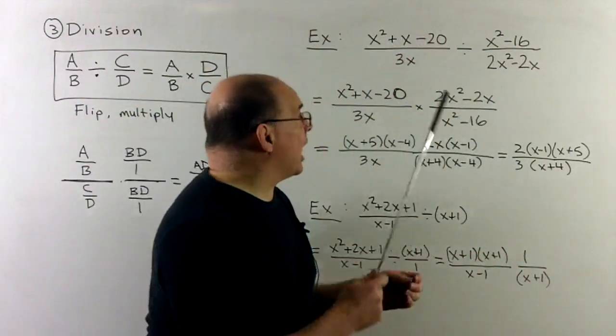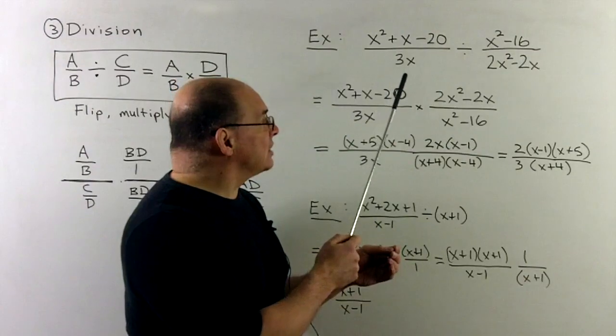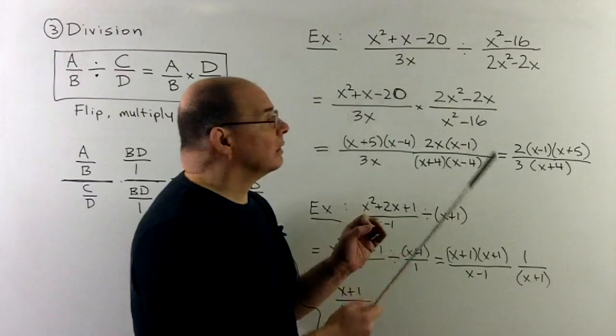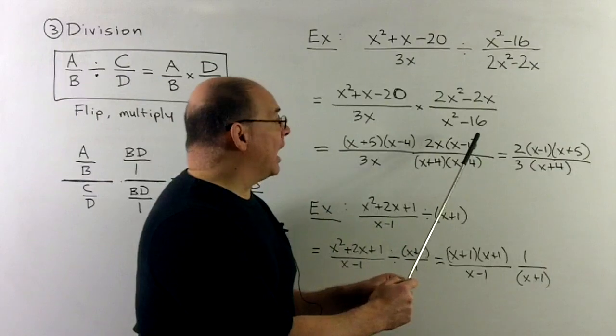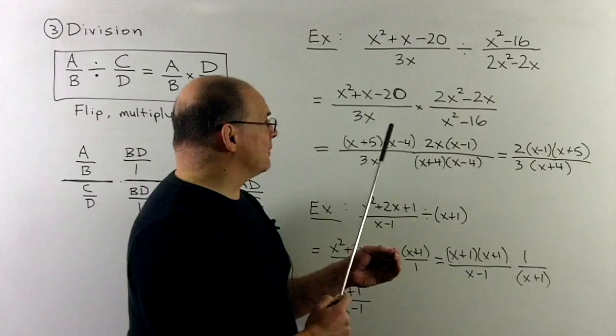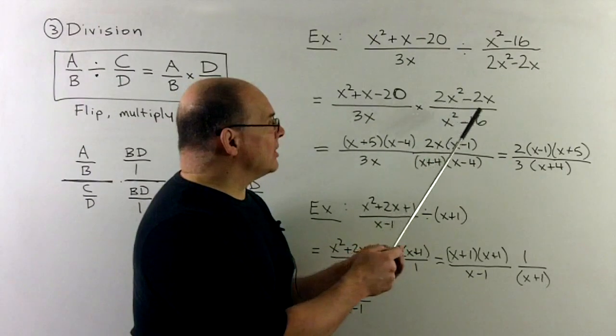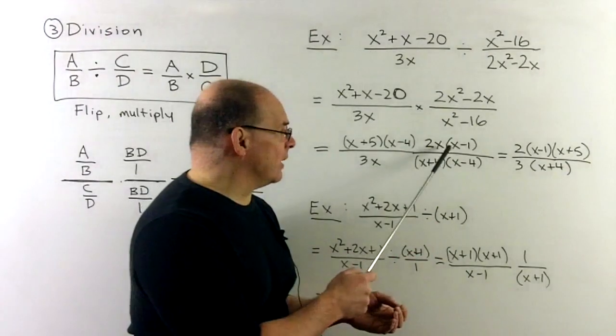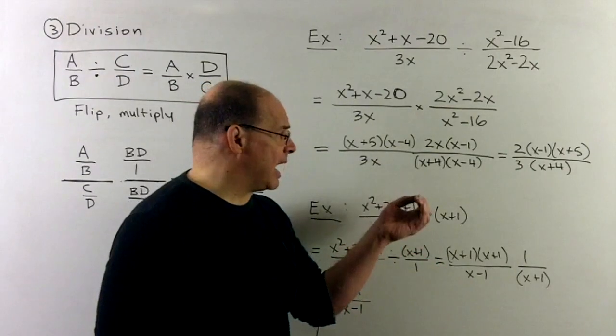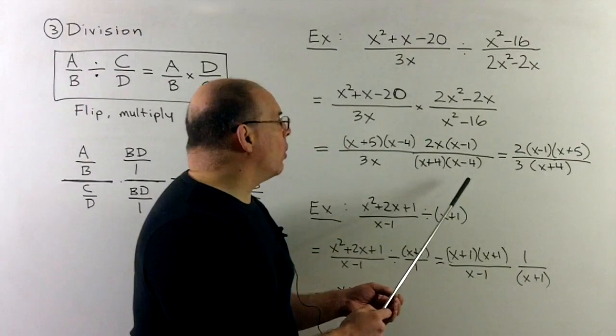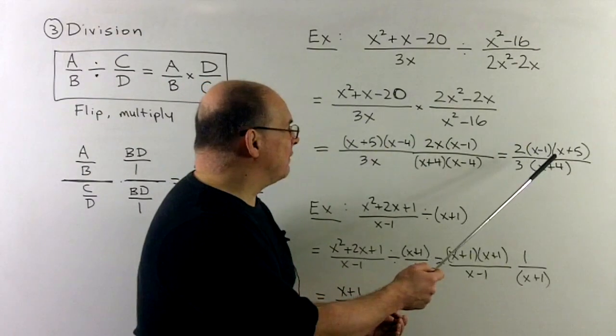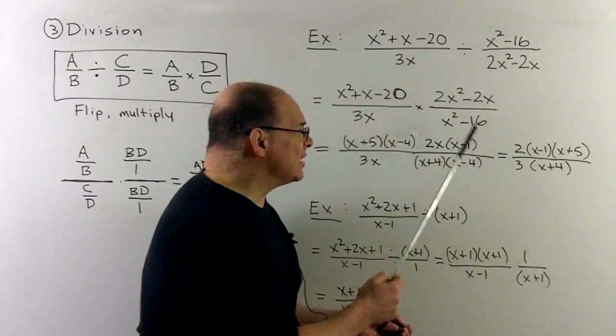Now, for an example, let's try x squared plus x minus 20 over 3x. We divide by x squared minus 16 over 2x squared minus 2x. We flip the second one, then we multiply. So, there's a lot of factoring to do here. x squared plus x minus 20 is an x plus 5x minus 4. 2x squared minus 2x, we can factor out a 2x, leaving us with an x minus 1. x squared minus 16 is a difference of two squares. So, x plus 4, x minus 4. The x minus 4s go away. The x's go away, leaving us with 2 thirds, x minus 1, x plus 5 over x plus 4. Then that's as far as that's going to go.